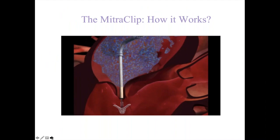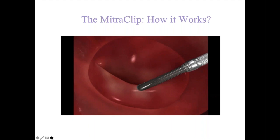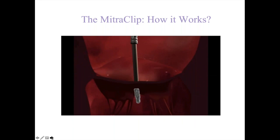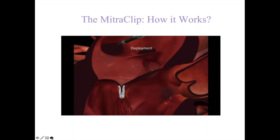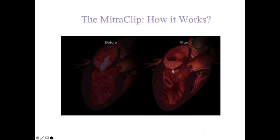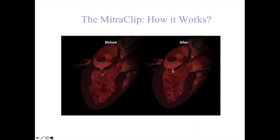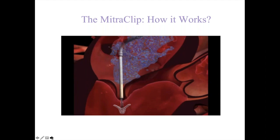The MitraClip procedure is done from a leg vein. We cross from the right side of the heart to the left side, and then this tube is maneuvered across the mitral valve. We use transesophageal echocardiography and general anesthesia, then capture the leaflets where the leak is occurring and pull them together with this staple-like device. We can examine it under echo and fluoroscopy to make sure it's in the right spot, then release it and confirm the leak is improved. We can place one, two, or even three clips as necessary. Patients are typically able to go home the next day.